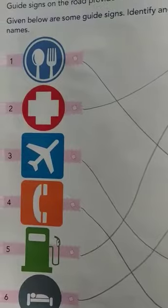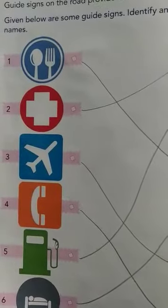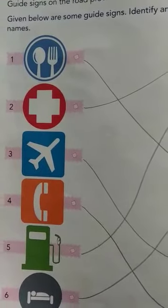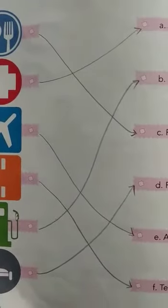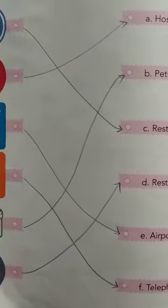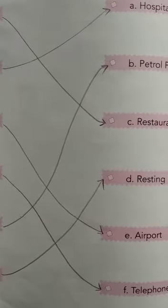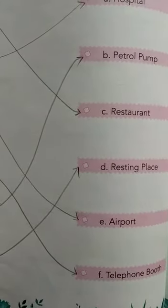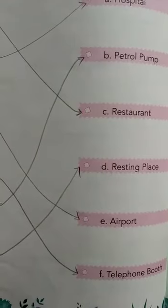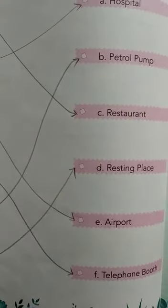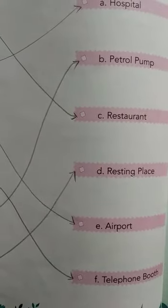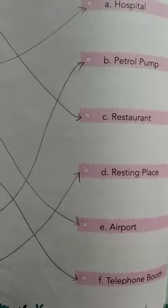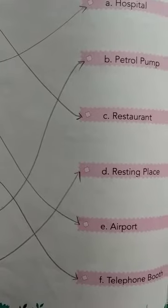The next one is a Phone. Phone is the sign of — very simple — Telephone Booth. So match picture number four with Telephone Booth.